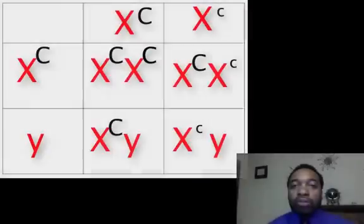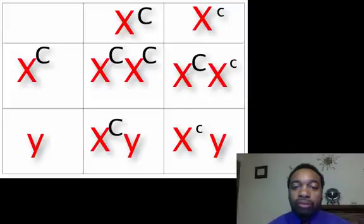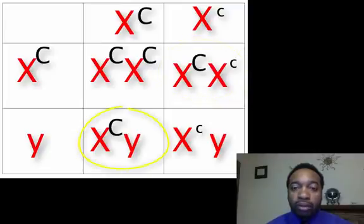If you set up the Punnett square the right way, you'll have the following: a normal female, a carrier female, a normal male, and a colorblind male.